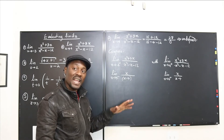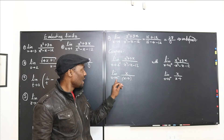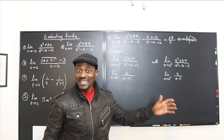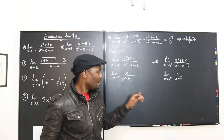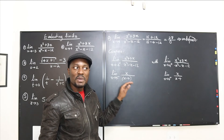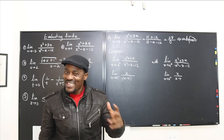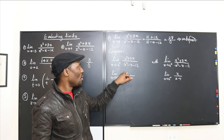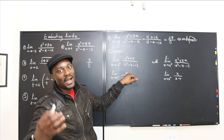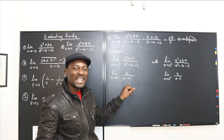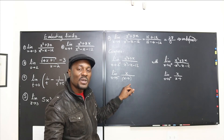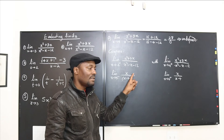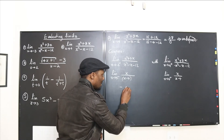Approaching 4 from the left means picking a number slightly less than 4 — like 3.9999999. So the denominator becomes 3.9999999 minus 4, which is a tiny negative number. You're dividing a positive number by a tiny negative number, so the result approaches negative infinity.